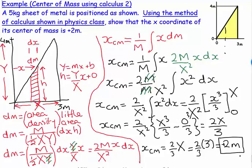Putting in the numbers, two thirds of three meters gives two meters, confirming the answer. The key skill here is justifying how to convert dm into dx — and that step is all physics when you think about it.